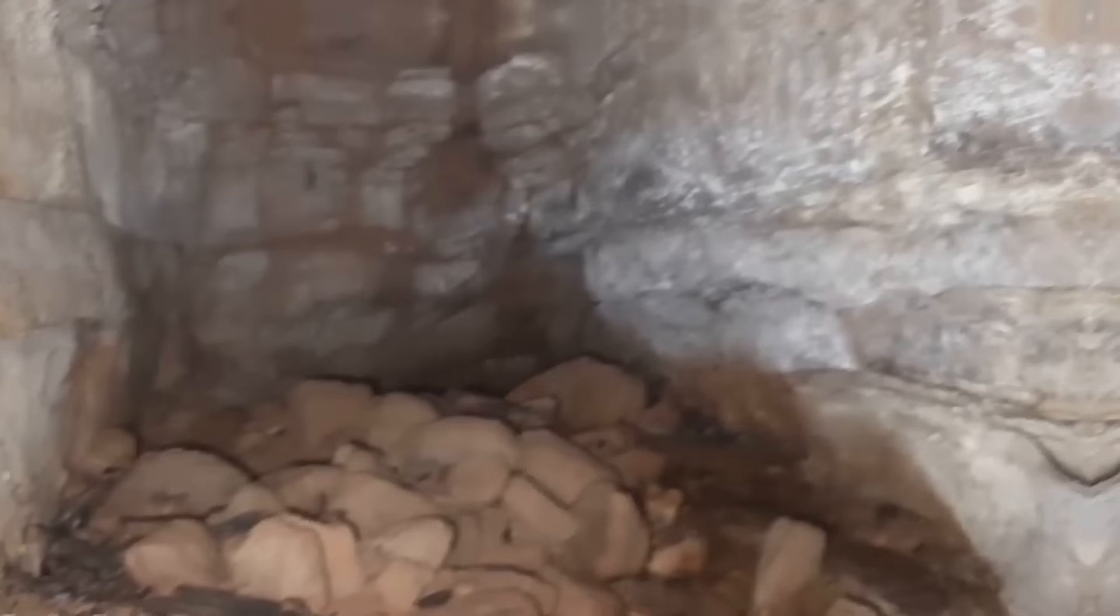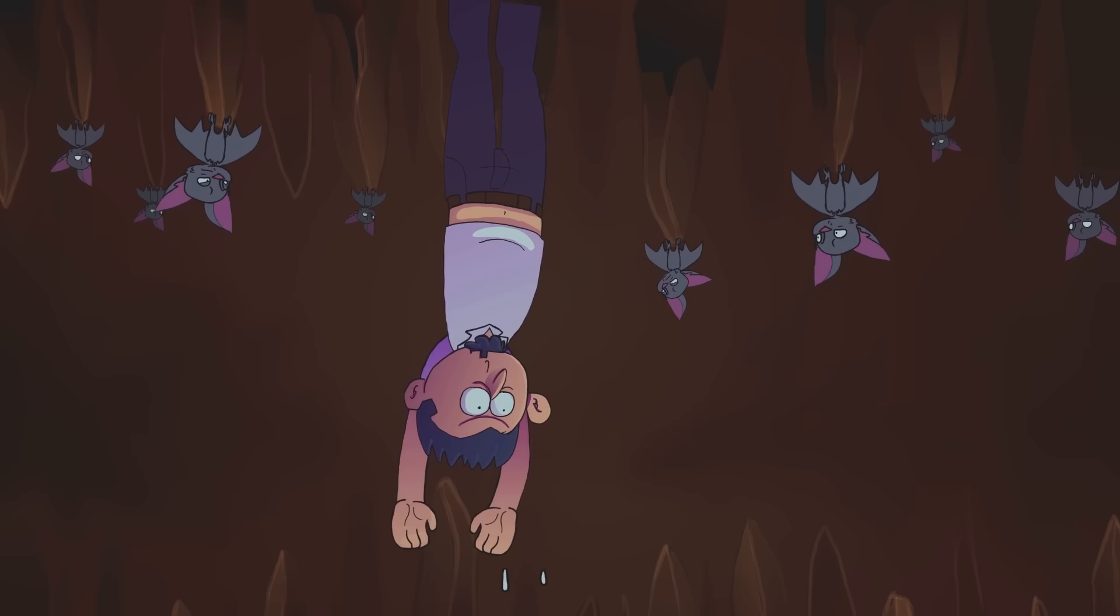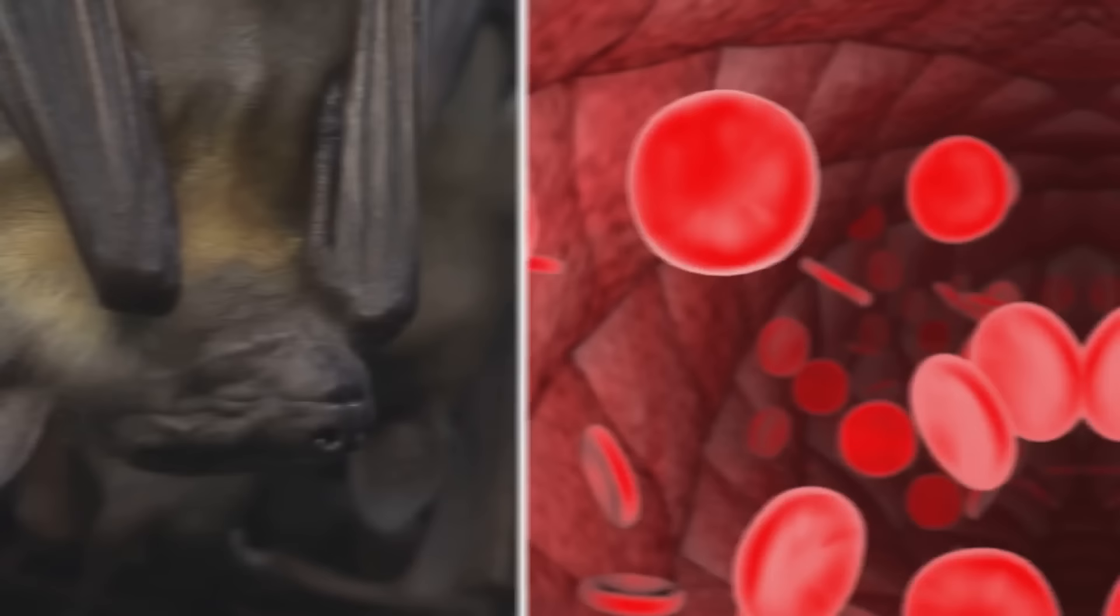So bats have no choice but to claw their way up to a high enough spot where they can let go and fall right into flight. It's actually pretty clever, because if a sleeping bat needs to make a quick escape, they're already in a prime position to spread their wings and fly away. If humans were to hang upside down for a prolonged period of time, all the blood would rush to our heads. But bats have got that covered too.